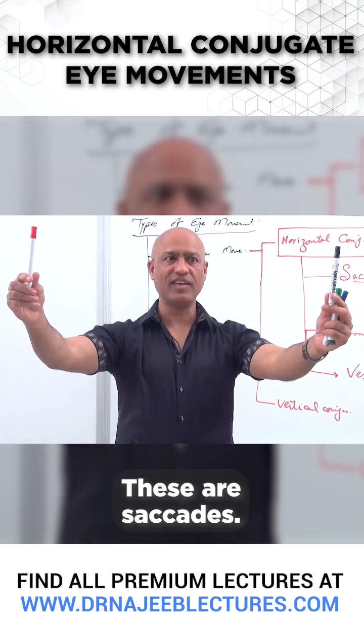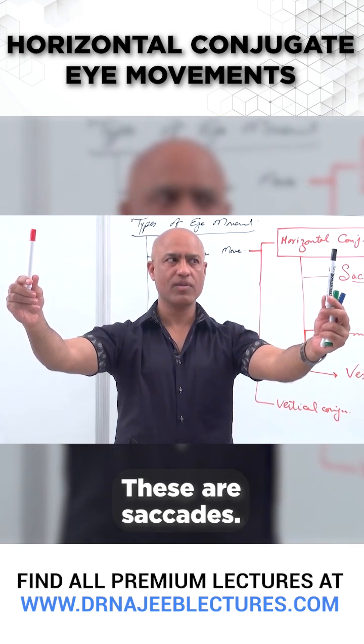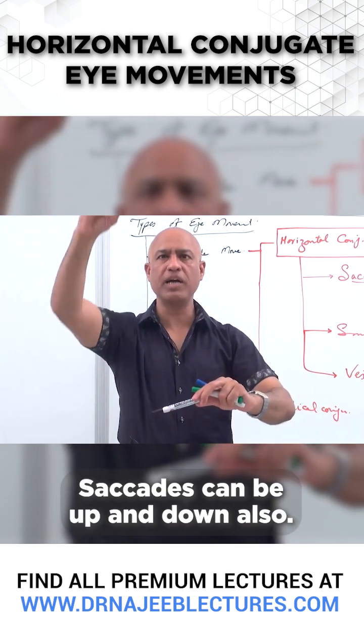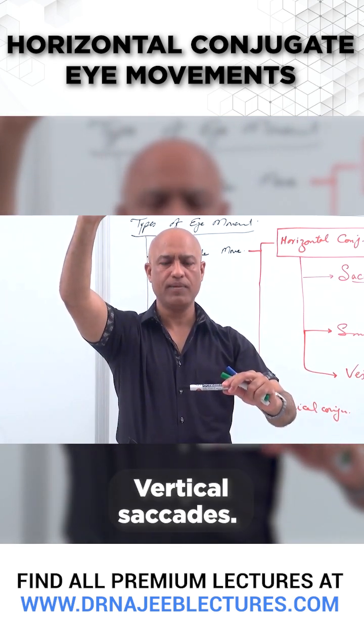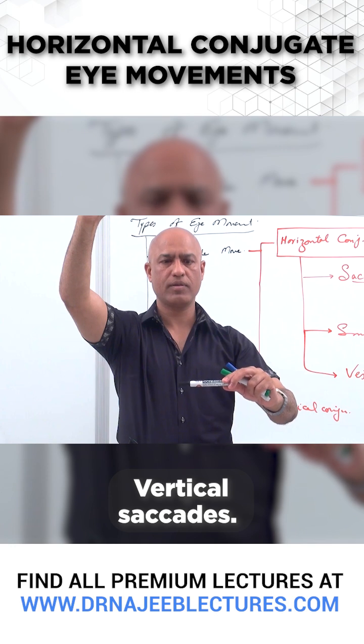Saccadic. These are saccades. Saccades can be up and down also — what are these vertical saccades.